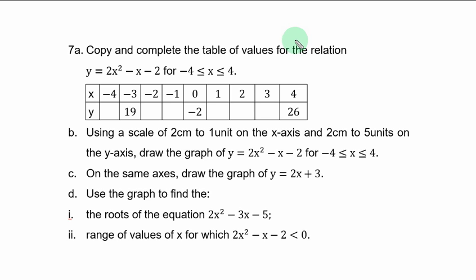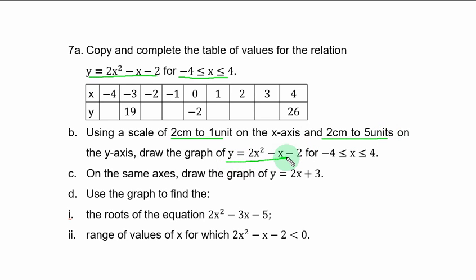Question 7a. Copy and complete the table of values for the relation y = 2s² - s - 2, for -4 ≤ s ≤ 4. You can see the table of values with some missing y values which you are expected to find. Using a scale of 2cm to 1 unit on the s-axis and 2cm to 5 units on the y-axis, draw the graph of y = 2s² - s - 2 for -4 ≤ s ≤ 4.